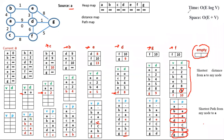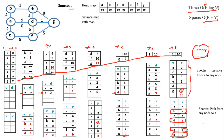The time complexity of Dijkstra's algorithm is O(E log V), and the space complexity is O(E + V). The E log V comes from performing E operations — the number of edges — on a decreasing number of vertices using the heap. So the time complexity is O(E log V). Thank you.